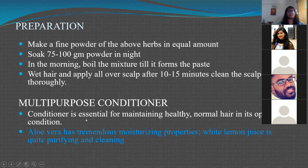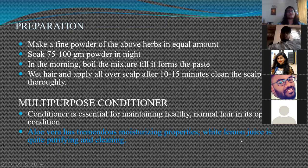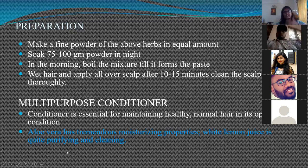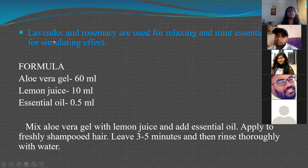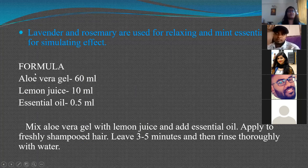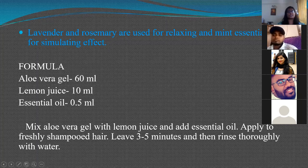A multi-purpose conditioner can be used for maintaining healthy normal hair. Aloe vera has tremendous moisturizing properties, and wild lemon juice has good purifying and cleansing properties. Lavender and rosemary can be used for relaxation, and mint for a stimulating effect. A typical formula consists of aloe vera gel, lemon juice, and essential oil—mix together, apply on frequently shampooed hair, leave 3–5 minutes, then rinse thoroughly with water.